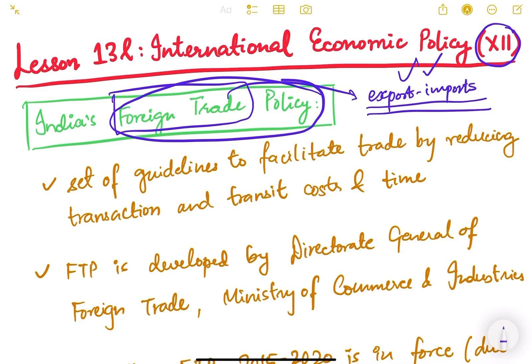That is known as foreign trade policy. Foreign trade policies are regularly updated — for example, every five years, every two years, or in some countries every year — depending on the changing scenario of the world and international regulations. Foreign trade policy also supports investments in a country.